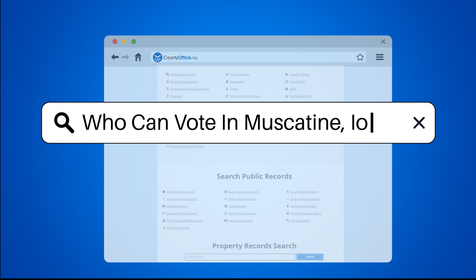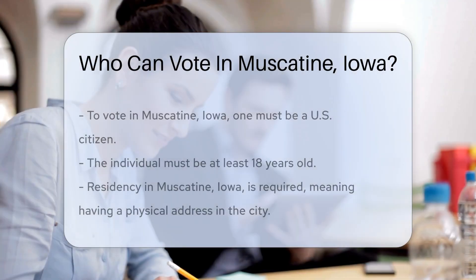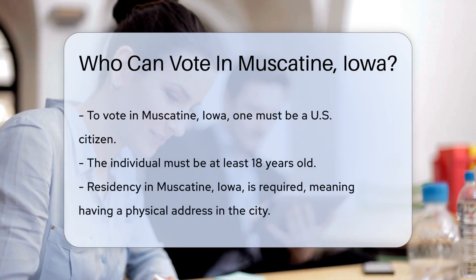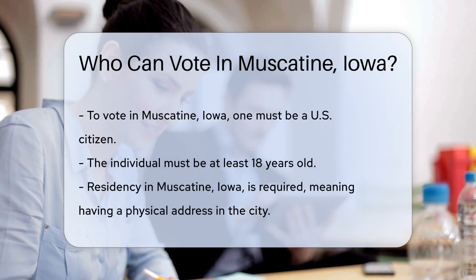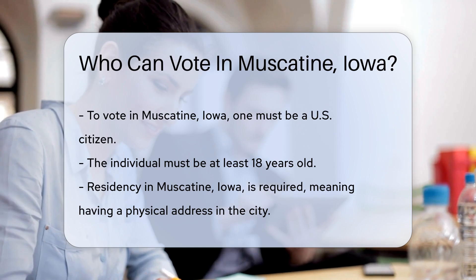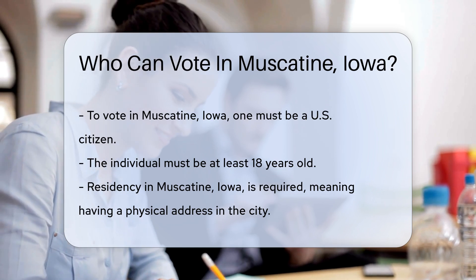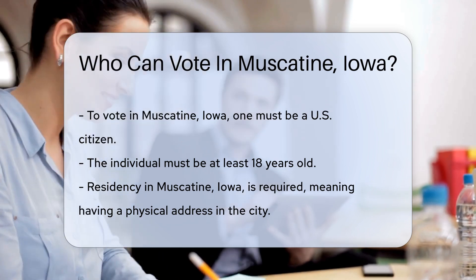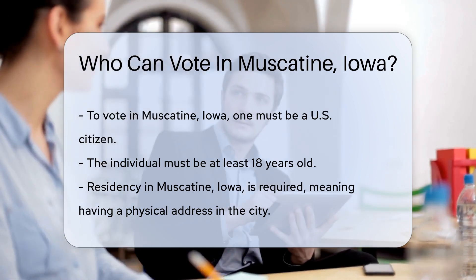Who can vote in Muscatine, Iowa? To vote in Muscatine, Iowa, certain criteria must be met. First, a person must be a U.S. citizen. Citizenship is a fundamental requirement for voting eligibility.